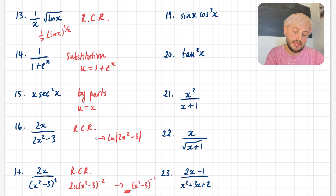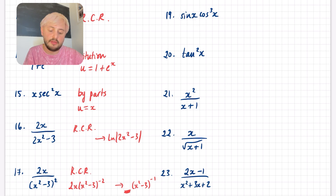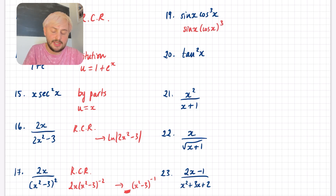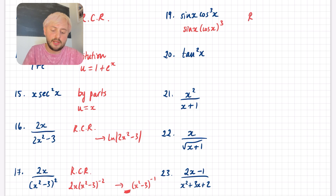Question 19: going through the list, it doesn't appear to be a standard result. Before checking by parts, I should see if this is a reverse chain rule. I might rewrite this as sin x · (cos x)³. This is going to be a reverse chain rule question because sin x is related to the derivative of (cos x)³. So this is reverse chain rule — it's going to be something like cos⁴x with some kind of scaling.